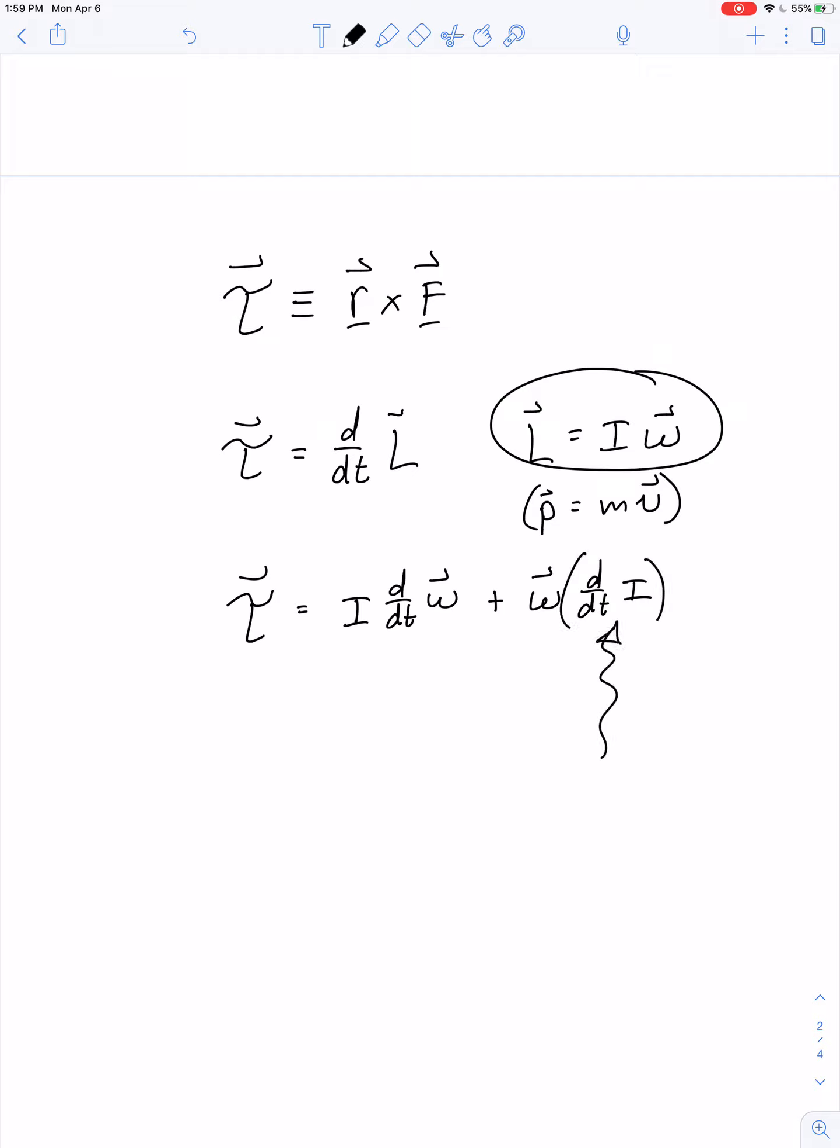We'll limit ourselves for now to examples where rotational inertia is constant. Therefore, the rate of change of rotational inertia equals zero and this whole term goes away.